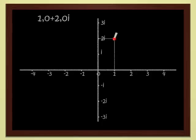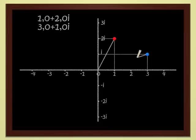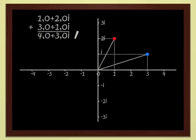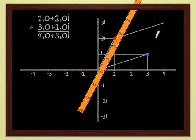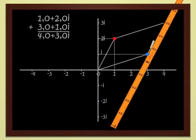Look at the red point, which is the point 1 plus 2i. Let's add 3 plus i, which is the blue point. Well, you add them just as school children do. That gives us 4 plus 3i. Geometrically, this is just addition of vectors. You see that it's no problem to add complex numbers.